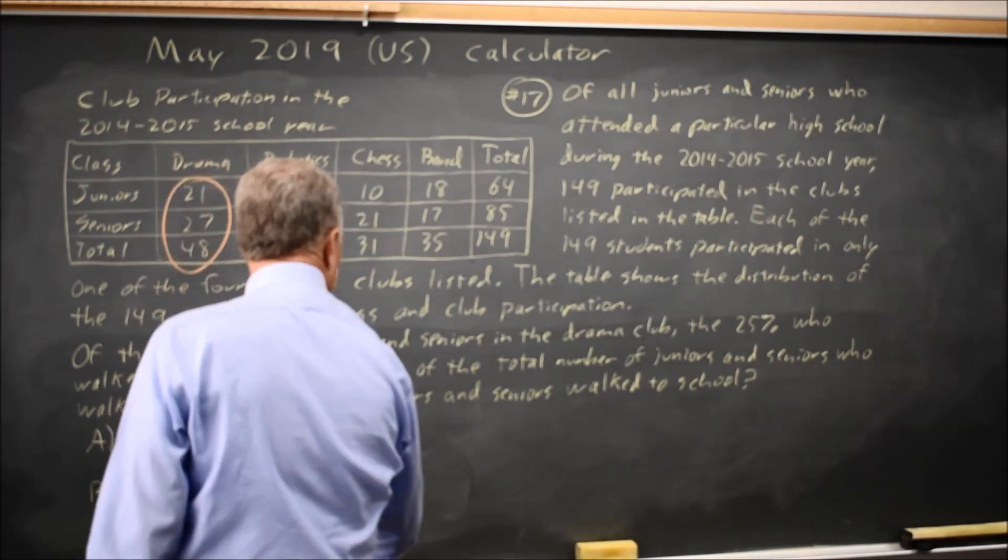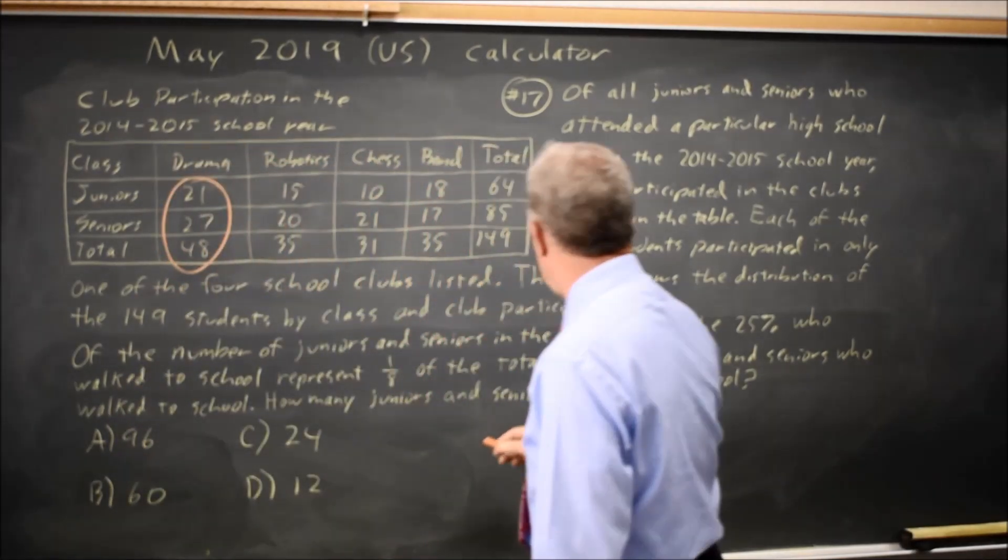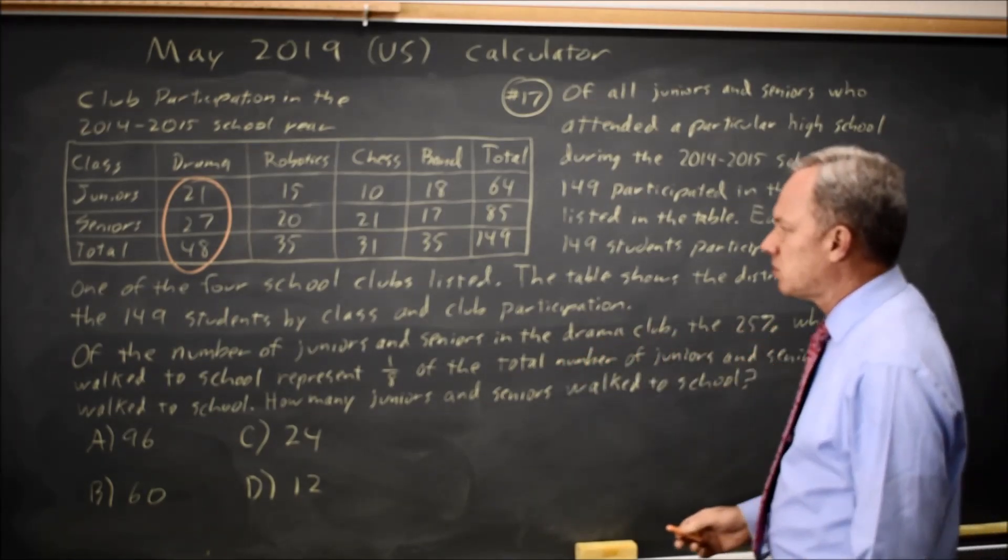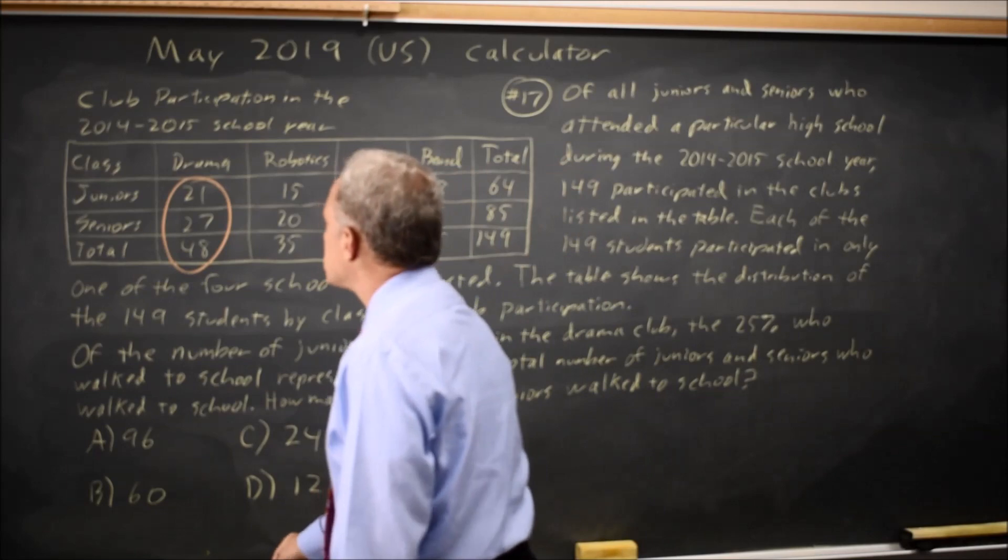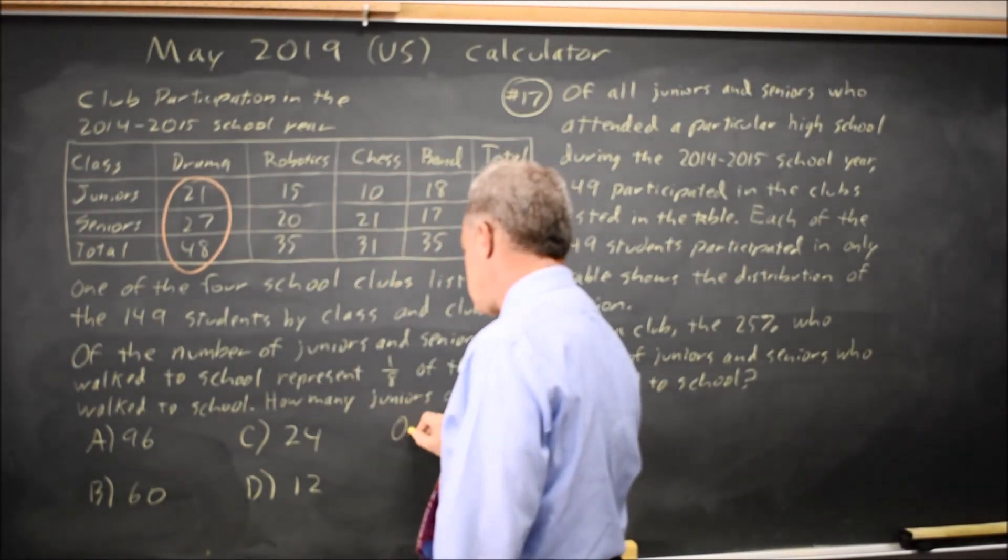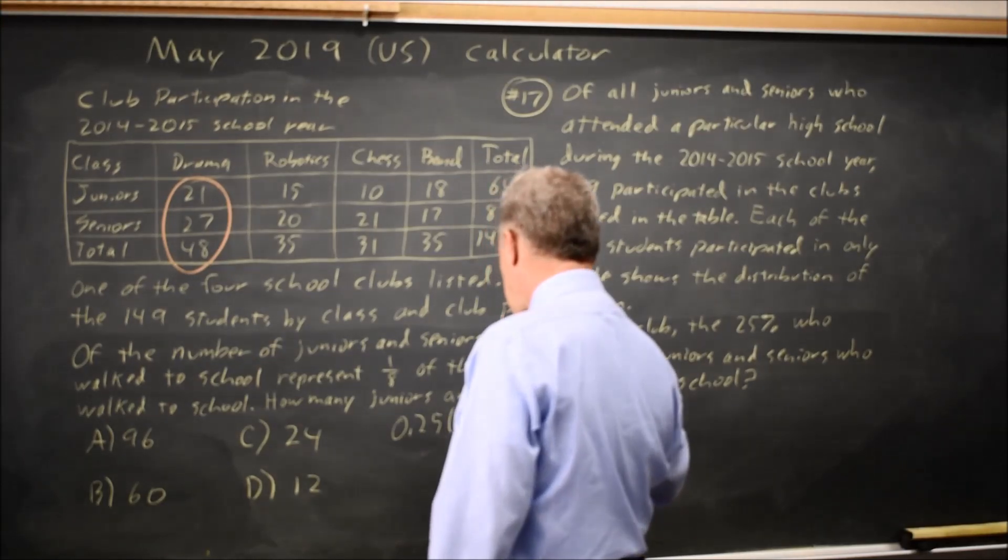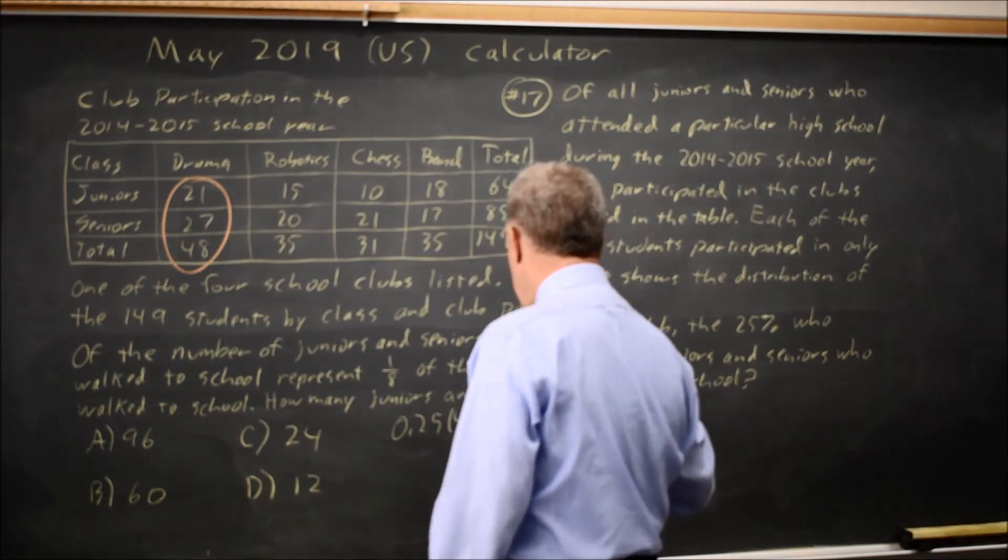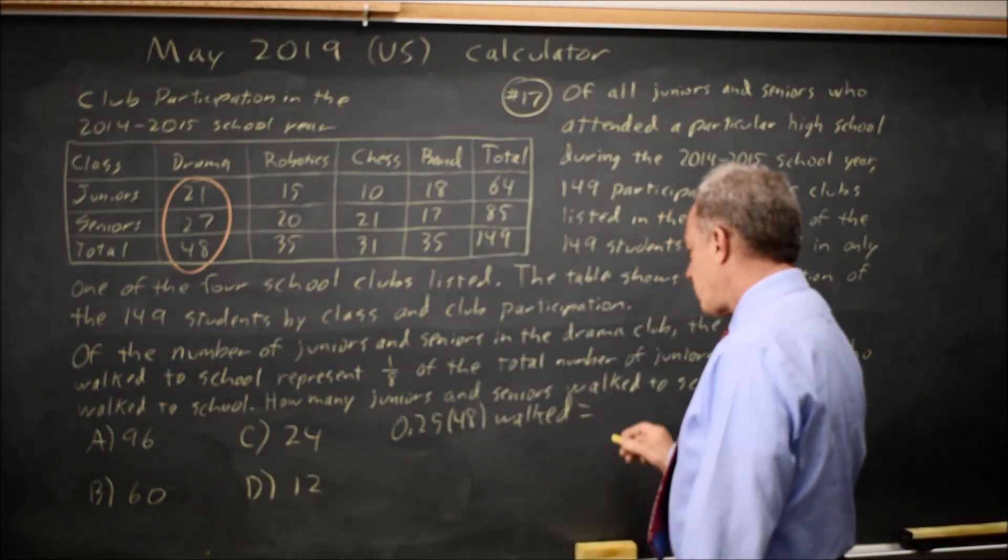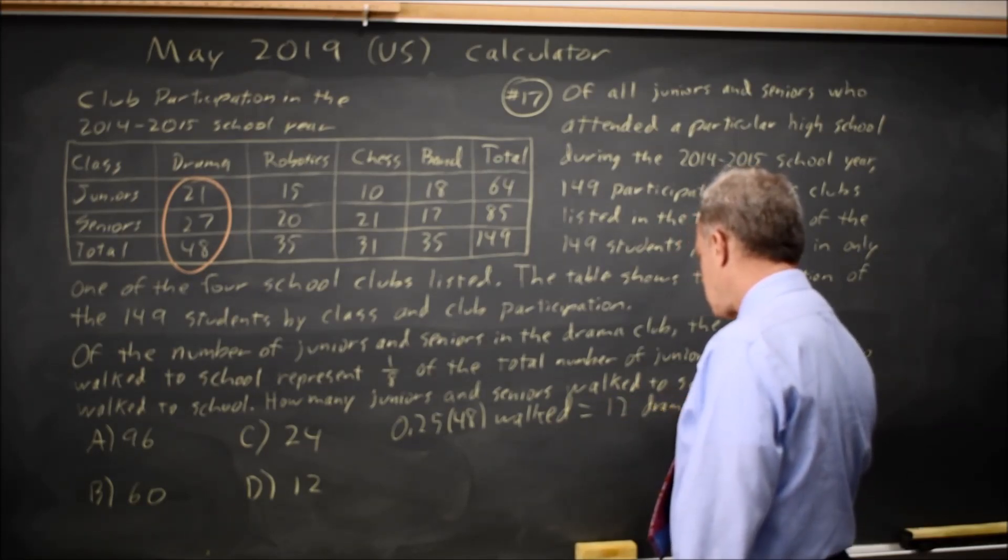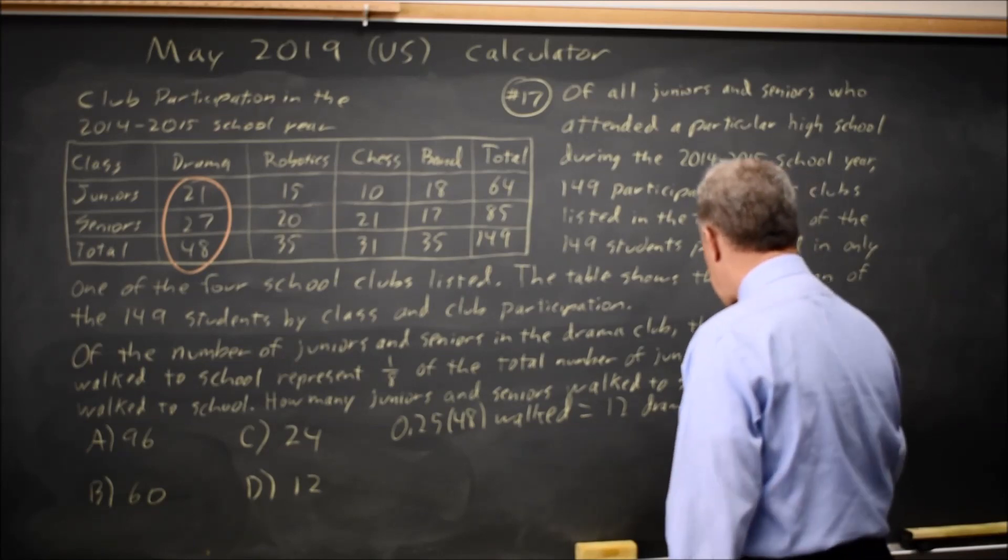Of the number of juniors and seniors in the drama club, 25% walked to school. So 25% of those 48, that is one-fourth of 48 is 12 drama juniors and seniors walked.